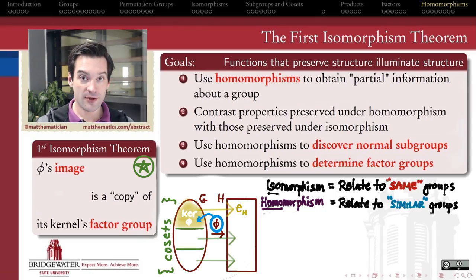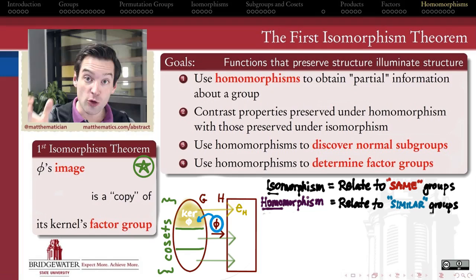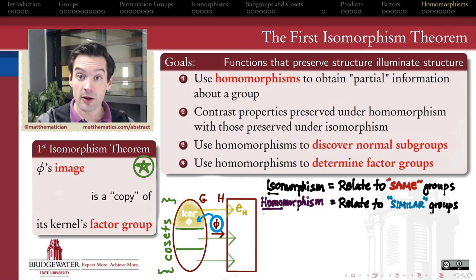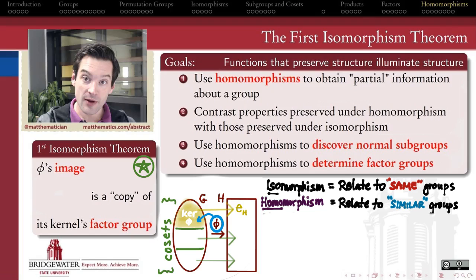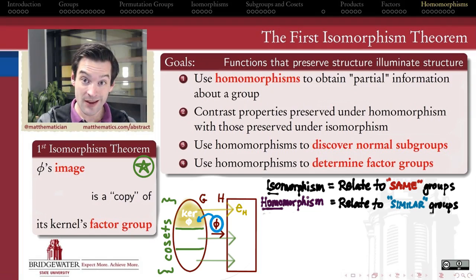We've seen examples of ways in which a homomorphism out of a group, because it preserves structure from that group, helps us to illuminate structure within that group. In this video, we want to look at how homomorphisms can be different from isomorphisms — when we give up the requirement that our function also be a bijection, one-to-one and onto. What do we lose going from isomorphisms to homomorphisms, and what do we still get to keep?